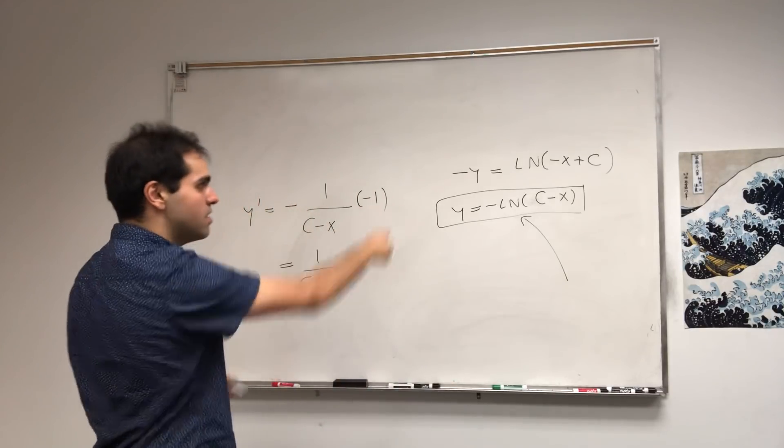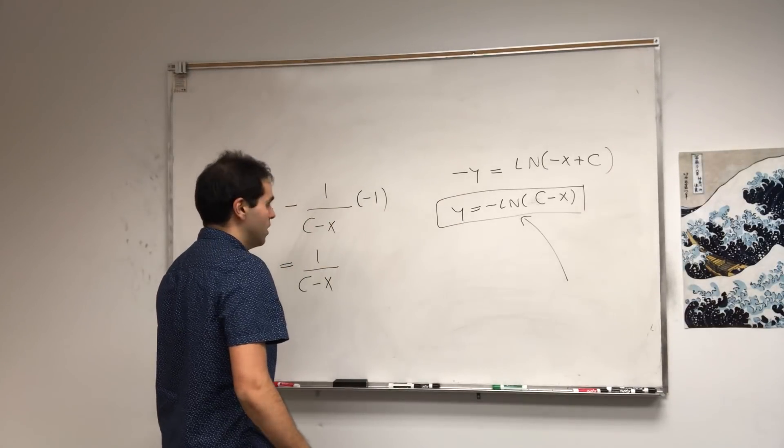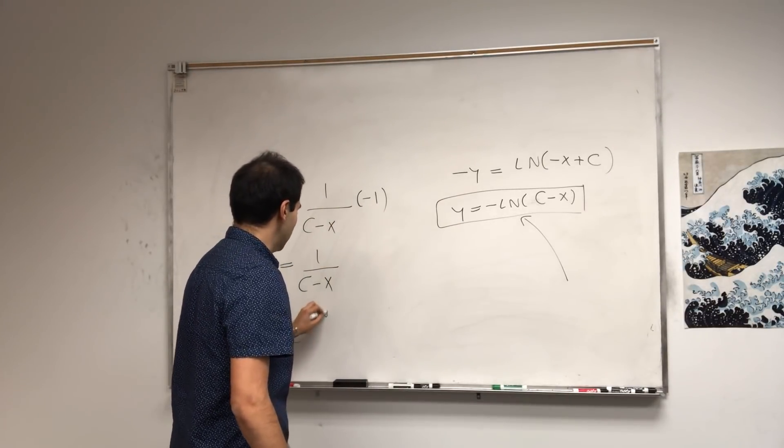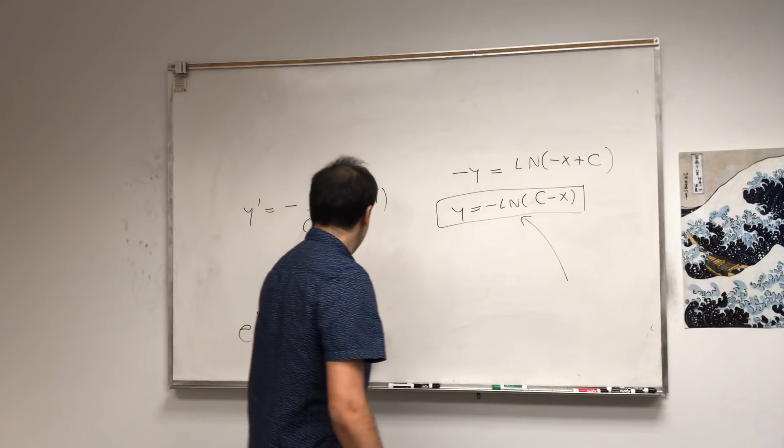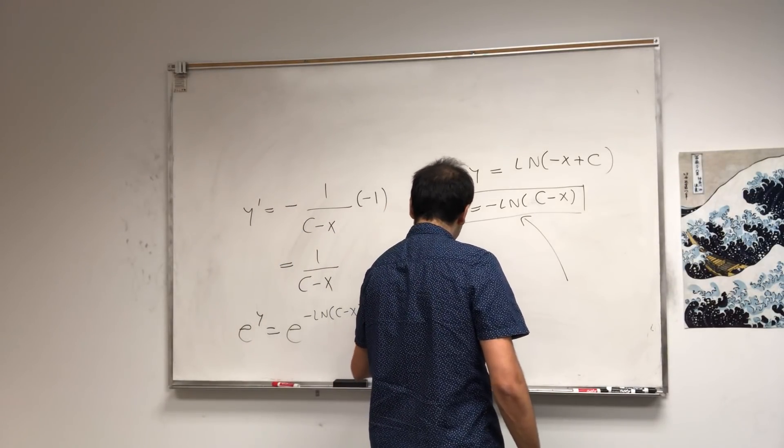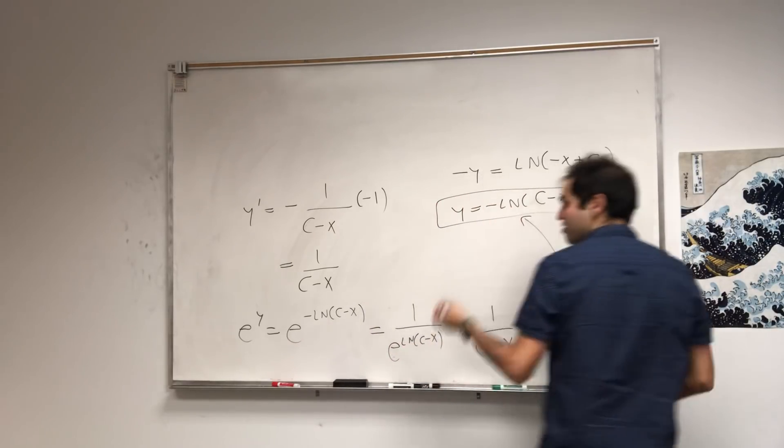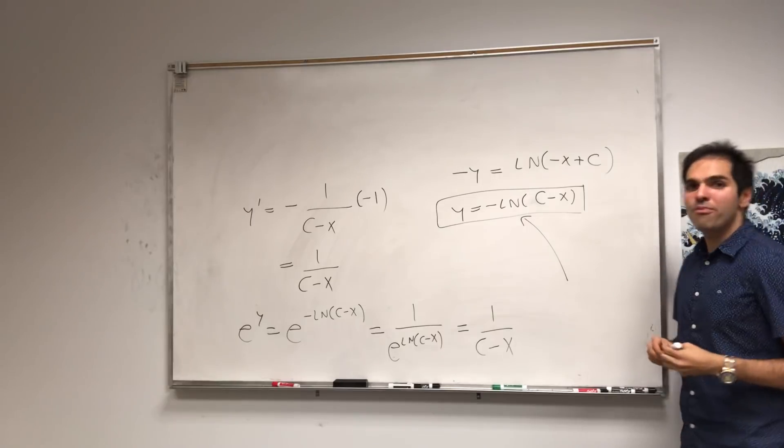And question, is this e of that? Well, e of y, it's e of minus ln of c minus x, which is 1 over e to the ln of c minus x. And believe it or not, it is 1 over c minus x, which is y prime.